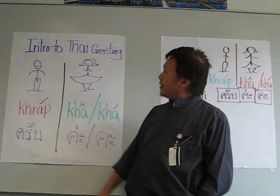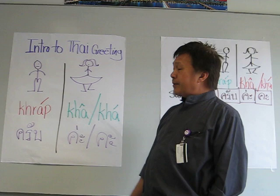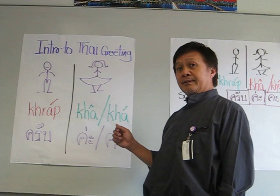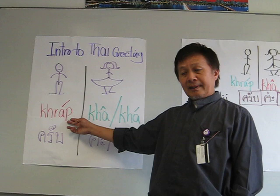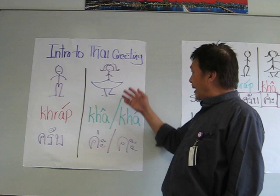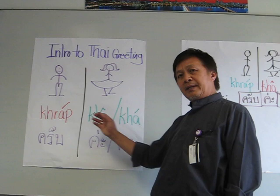Let's look at the introduction to the Thai readings here. First, you need to know that male and female have different polite particle endings. The male uses the word krab, and the female uses the word ka for a regular statement, but also ka for a question. You need to have this when you end the sentence.